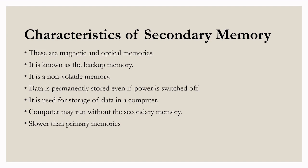Some characteristics of secondary memory are: these are magnetic and optical memories. It is also known as backup memory. It is mainly non-volatile memory, and data is permanently stored even if power is switched off. It is used for storing data in the computer. A computer may run without secondary memory, meaning it is not required to run the computer. The main fact is that secondary memories are slower than primary memories.